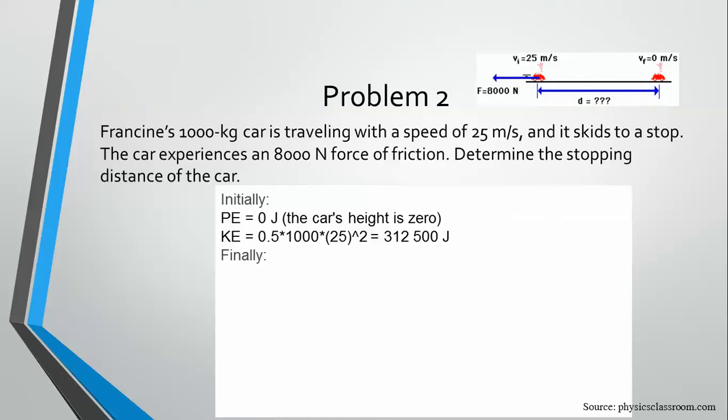And at the end, her potential energy is zero. She's still at height zero, and it's coming to a stop. So her final kinetic energy is zero joules. So from these two numbers, you can see that energy is not conserved, but we're going to use the work added to the system to see how far she traveled.